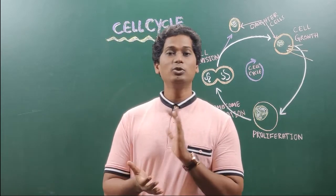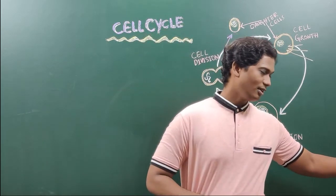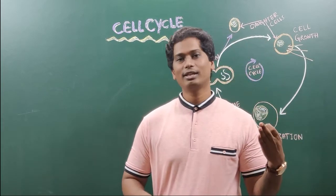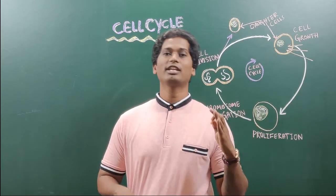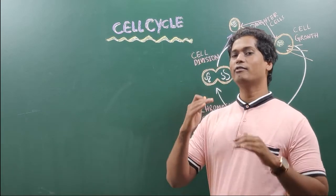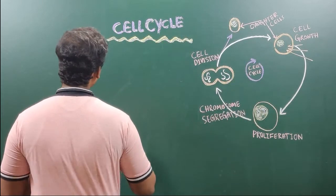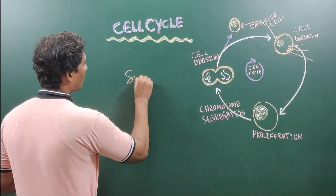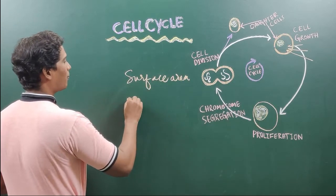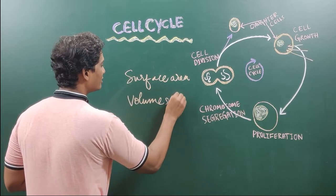What is my third question? Why do cells divide? This is very important. Without division, you cannot form a new cell. Cells divide to maintain the appropriate surface area and to maintain the appropriate volume ratio. This is the reason cell division is very much important.